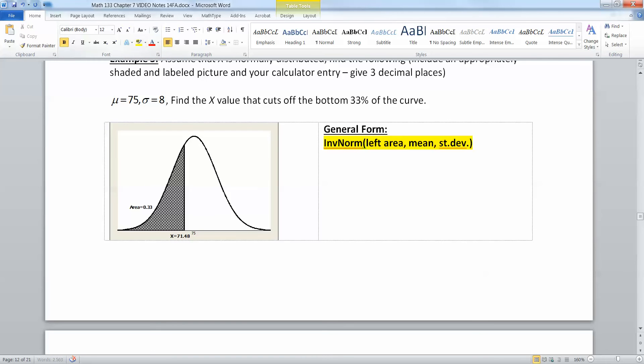Okay, so if that's our general form, then we are going to use inverse norm. Our left tail area is 0.33. By definition, it's the area in the left tail. Our mean is 75, and our standard deviation is 8. So now I'm going to grab the calculator,